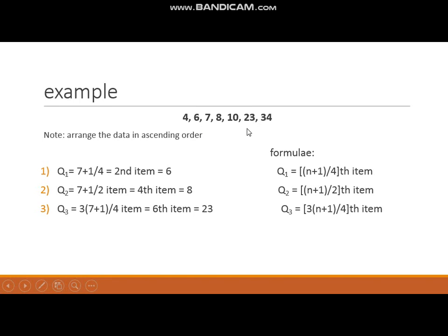For example, we are given a series of data. First, we arrange it in ascending order. Then we find Q1, Q2 and Q3 using their respective formulas. Here we have 7 number of observations. Using the formulas, Q1 is 6, Q2 is 8, and Q3 is 23 — which are our 1st, 2nd and 3rd quartiles.